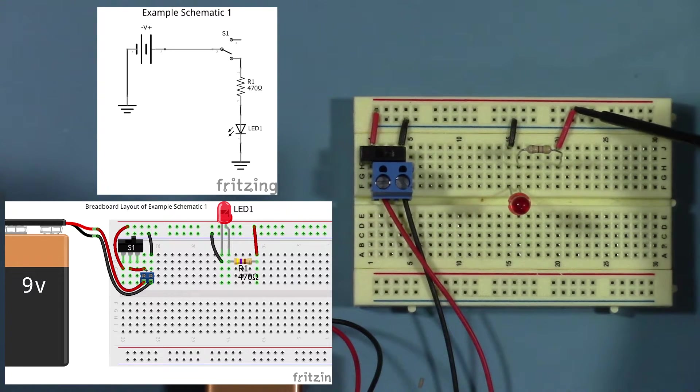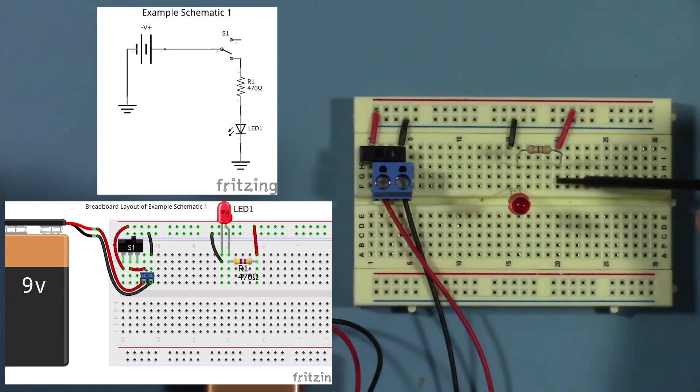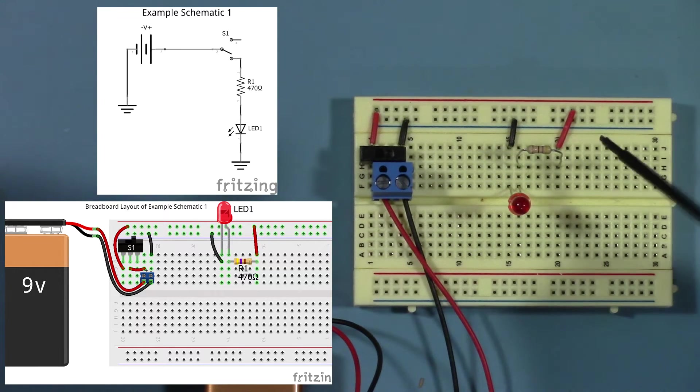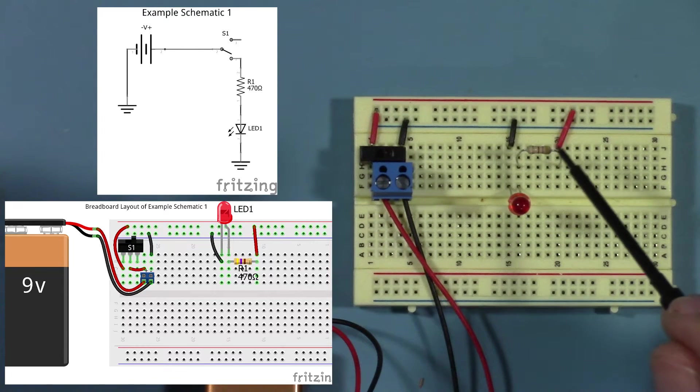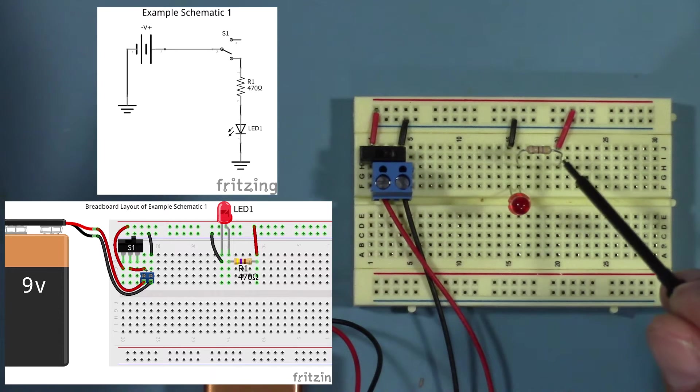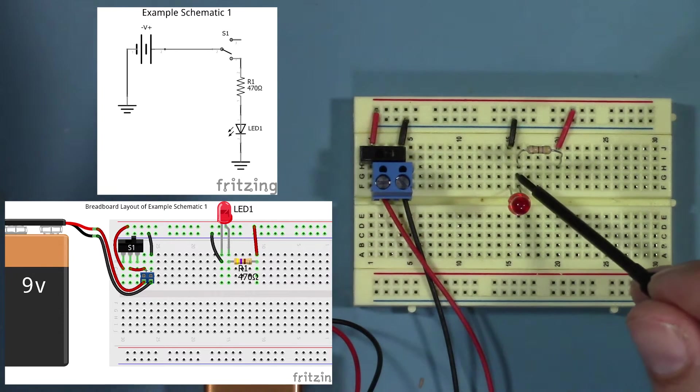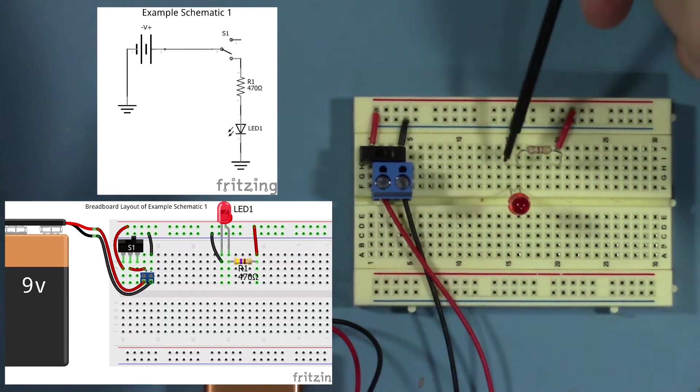Then it travels through this wire into this row. It looks like we have it on row 20. And then it gets routed to this resistor. This resistor is a 470 ohm resistor. It goes through this resistor into the positive or anode side of the LED, through the LED, down the cathode or negative side.